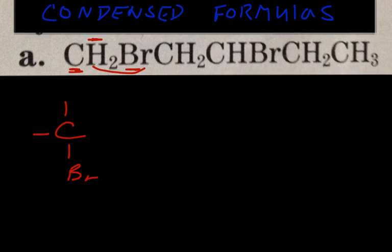You look at the second carbon. You write it down. Attached to it is what's in front of it — just two H's. So you put an H at the top, H at the bottom. I'm leaving the H's out for the sake of space, but the blank lines represent hydrogens. And that's done.